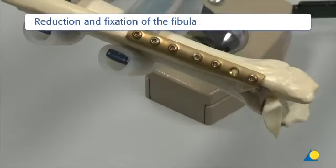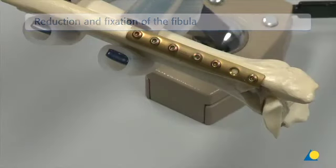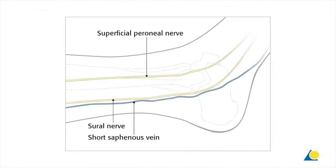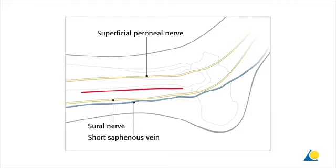The first step is the reduction and fixation of the fibular fracture. The standard approach is a longitudinal lateral incision — a 10 to 15 cm straight lateral incision made in line with the fibula. Care is taken to avoid injury to the superficial peroneal nerve, which lies very closely anteriorly, especially in the proximal part of the incision. In more anterior incisions, it should be identified and protected. When dissecting posteriorly, care is taken not to damage the short saphenous vein and the sural nerve.